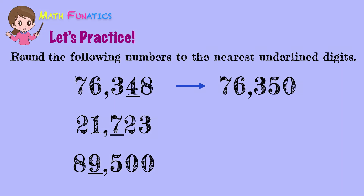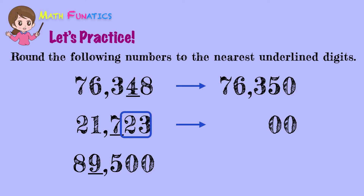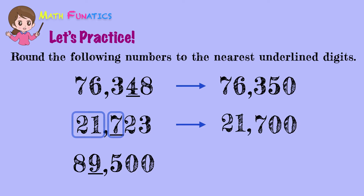The second number has to be rounded to the nearest hundreds place. The digit to the right of the rounding place is 2. Since it is less than 5, we have to round down the number. Change the digits 2 and 3 on the right to zeros, then copy 7 which is the digit in the rounding place, as well as the rest of the digits on the left. So, the rounded value is 21,700.